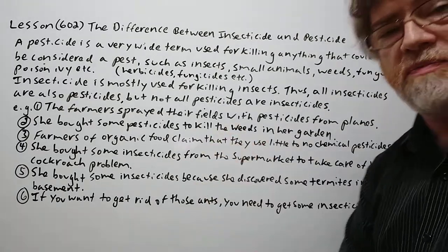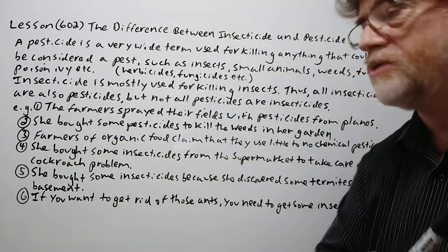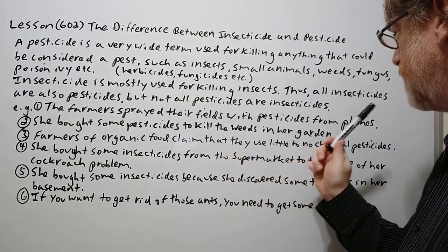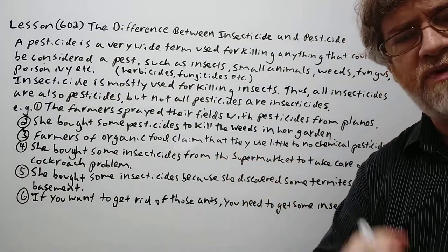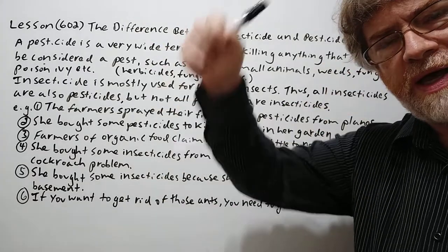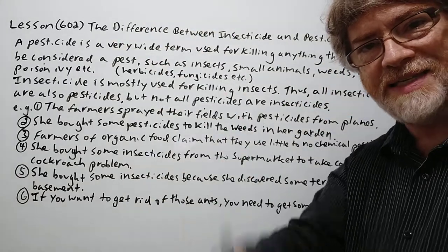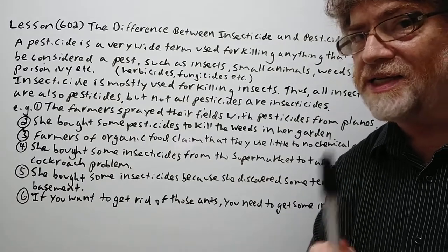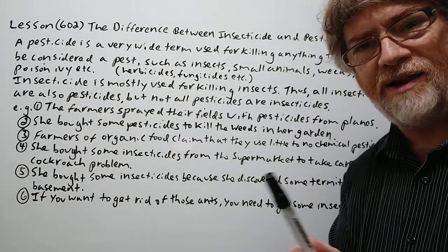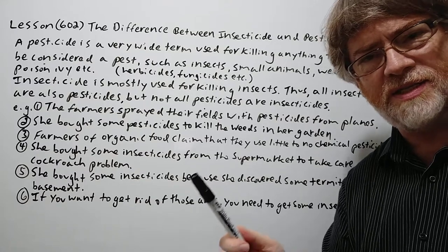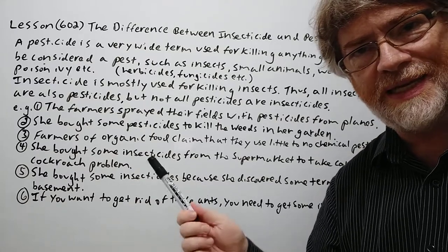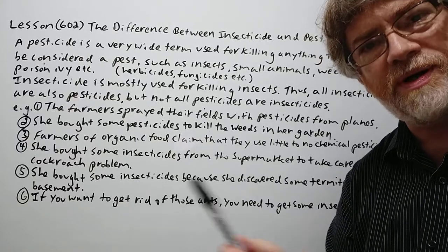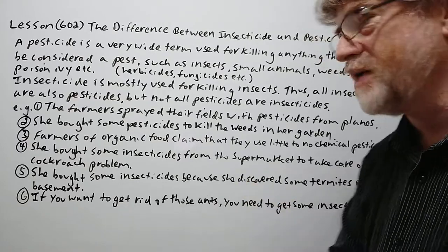We have six examples to show just how we use these words. Here's the first one: The farmers sprayed their fields with pesticides from planes. If you've ever seen planes going by and dropping gases down on the fields — again, it's not just insects, it's also field mice and other kinds of rodents that would eat a lot of crops as well, so they're trying to get rid of all of them.